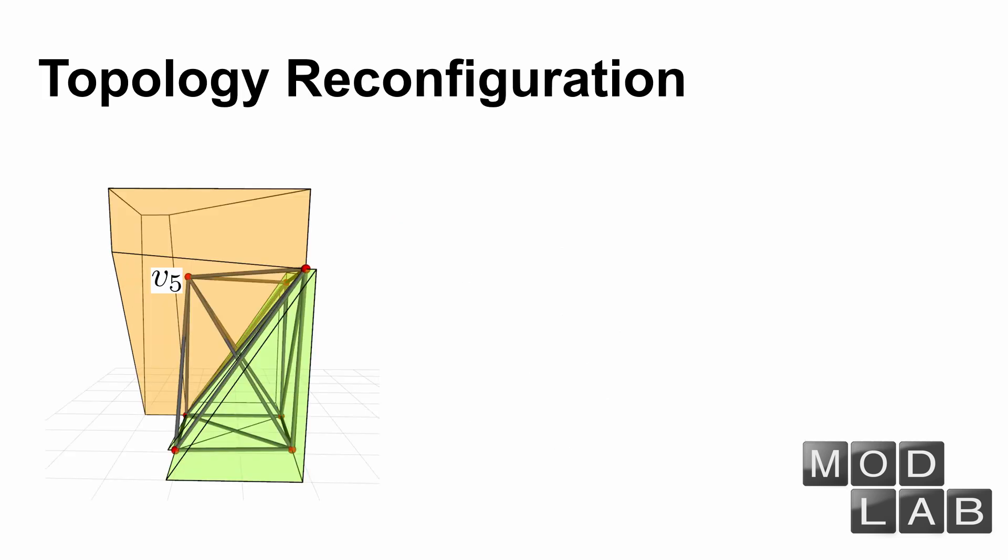Here we show a test result by using our topology reconfiguration planning. We first verify topology reconfiguration is needed if we want to move node V5 from the position in the yellow space to a new position inside the green space because these two spaces are separated.